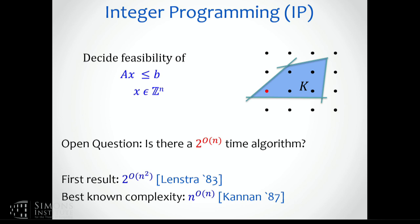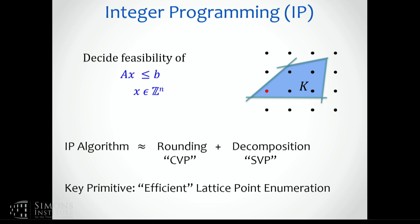I'll give you an impressionistic view of some of the tools that have been developed to attack this problem, that more or less will reduce it to getting improvements to a nice geometric conjecture. At a very high level, the algorithms for solving the feasibility problem decompose into something like a rounding step, where you try to find the center of your convex body and round to the nearest integer point — that can be interpreted as some generalized version of the closest vector problem. When that doesn't work, you try and break your problem up into pieces — that's the decomposition step.